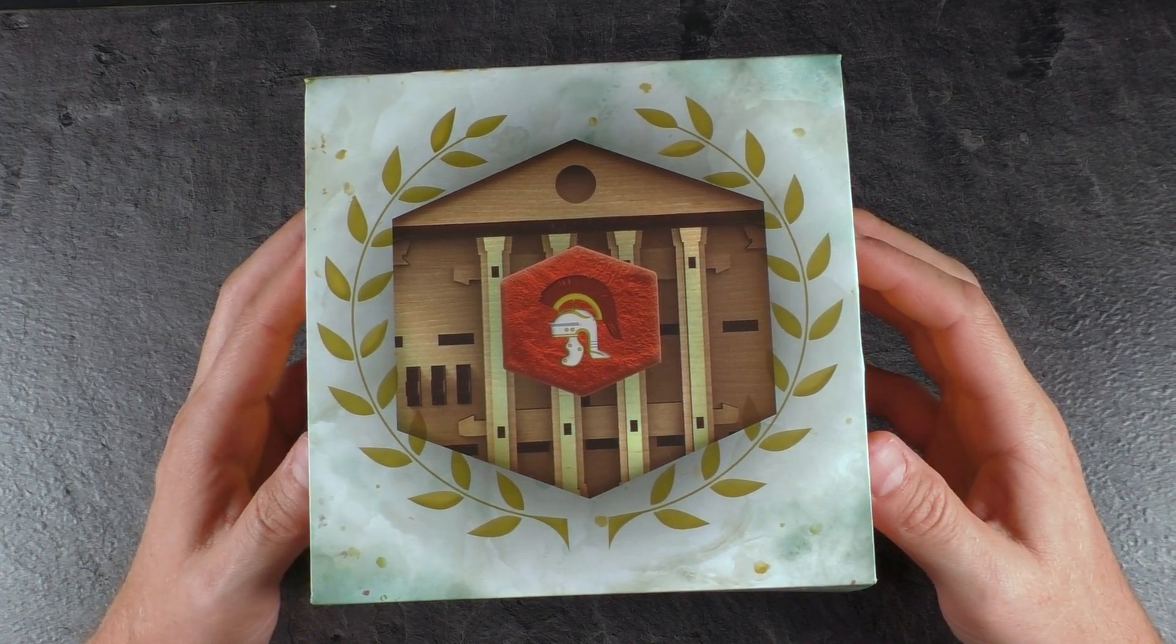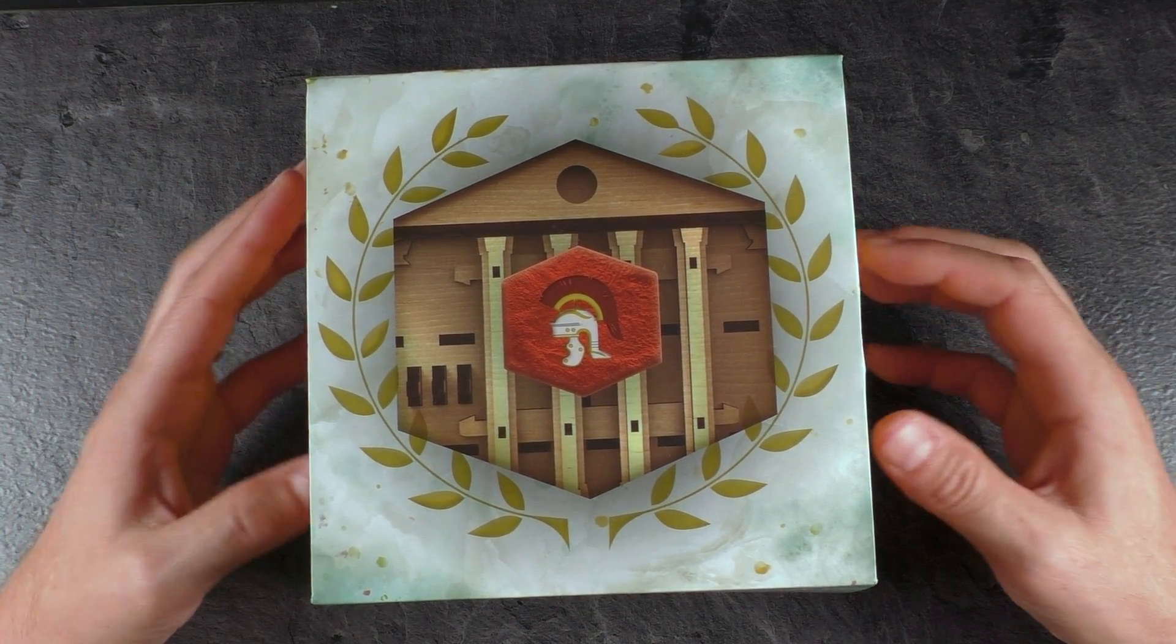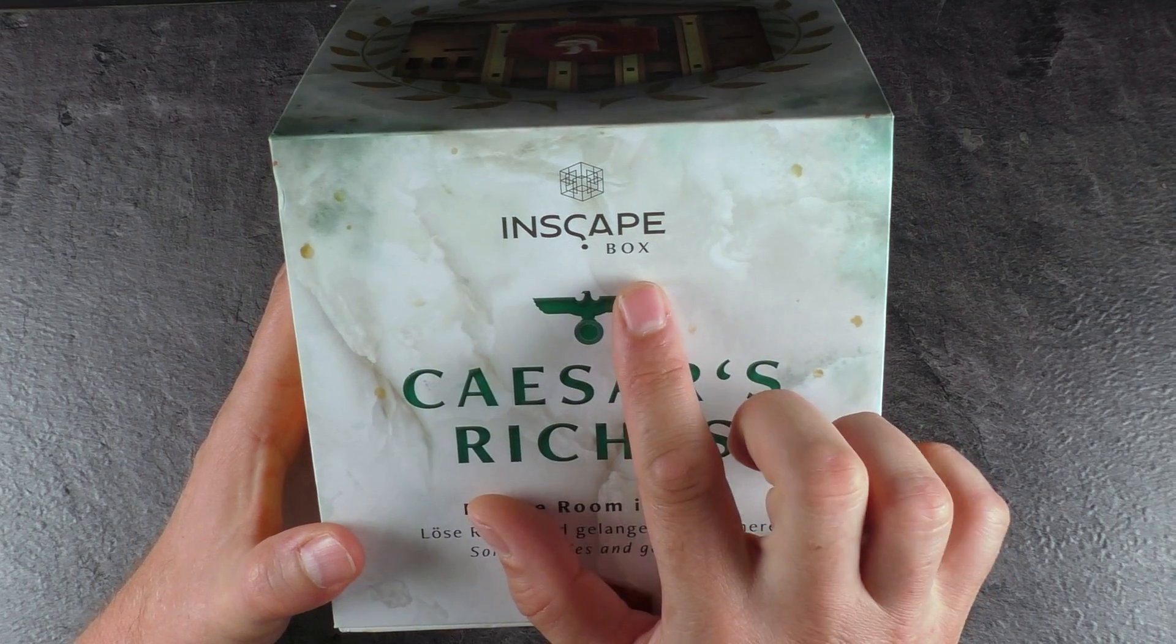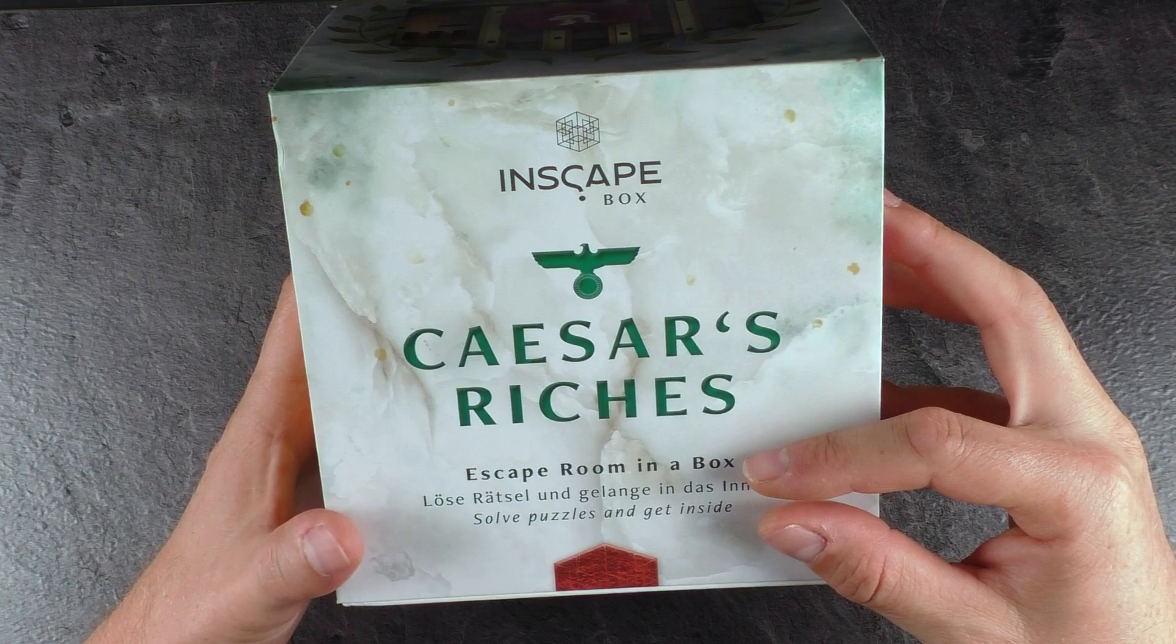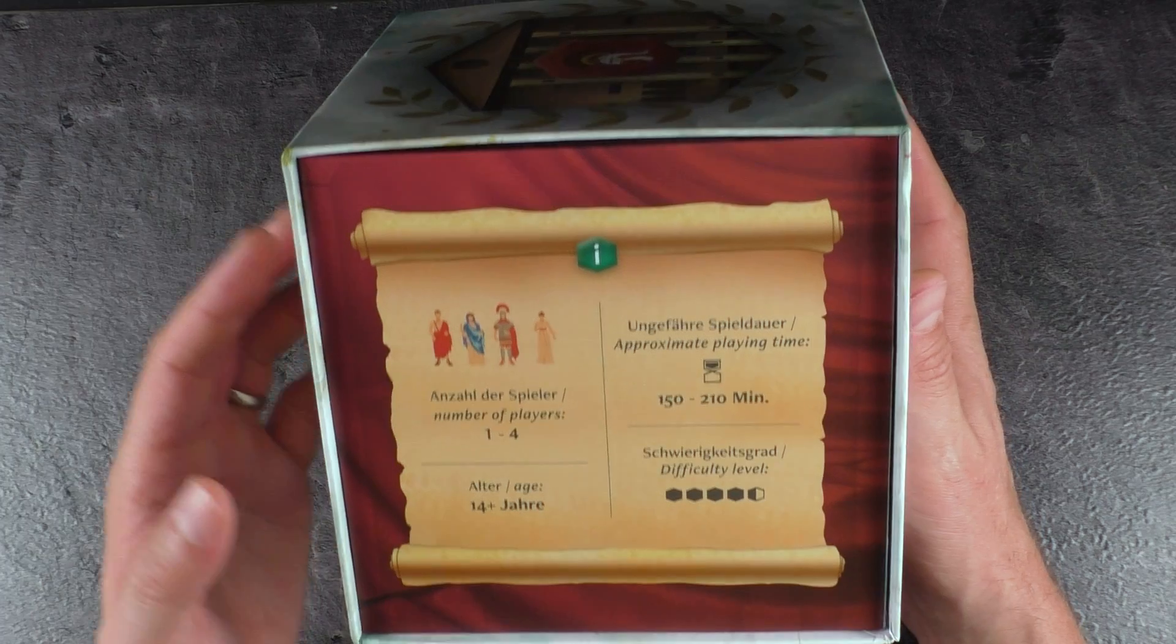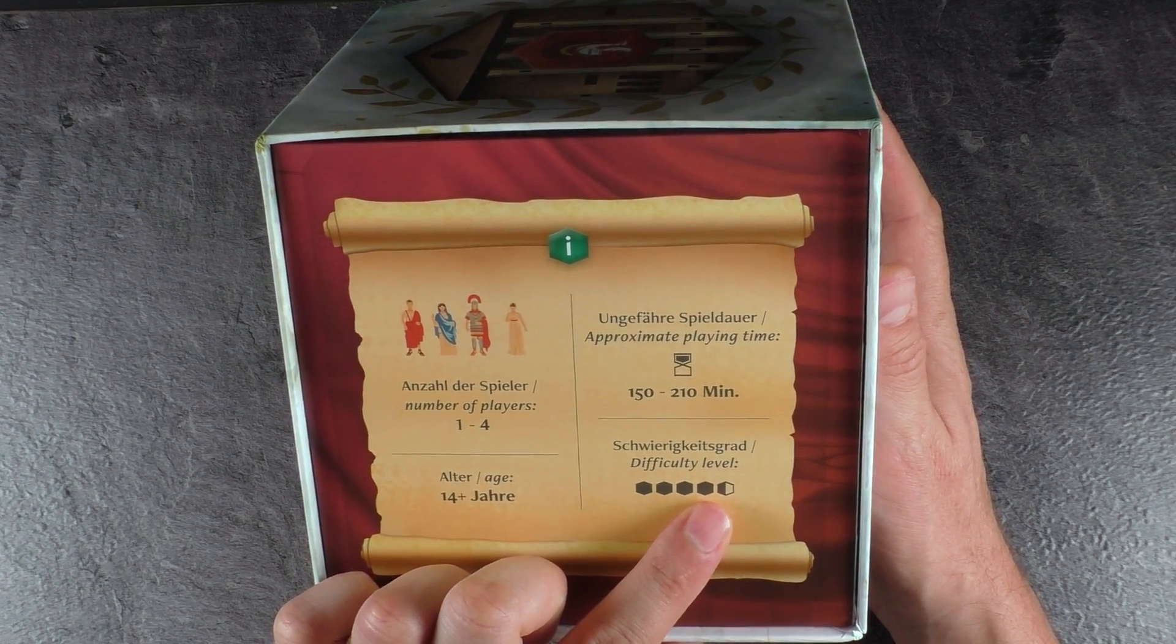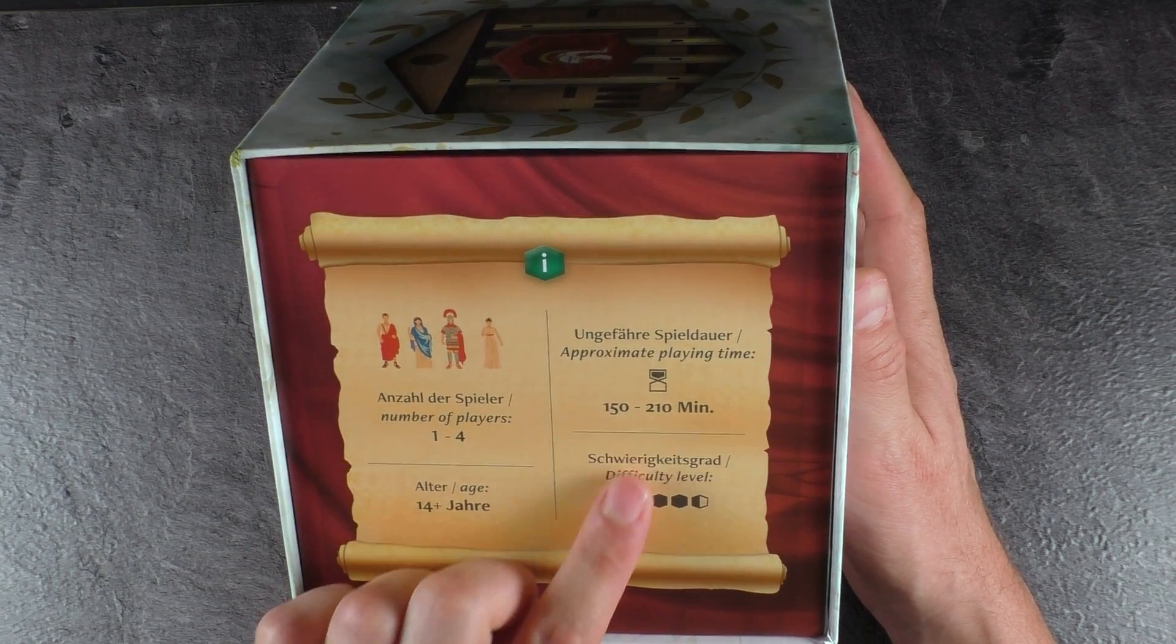So another escape room in the box, but this one is from a design point of view another interesting one, definitely interesting. It was made and designed by InScape Box and it's called Caesar's Riches. On the campaign you find more details and also the size of the compartment inside. It seems to be very difficult because you can see here 4.5 out of maximum 5, 150 to 210 minutes solving time.